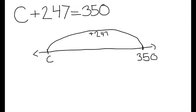The question now is how do you get back to your variable? Since we got to 350 by adding 247, we'll go back to our variable by using the inverse operation, subtracting 247.